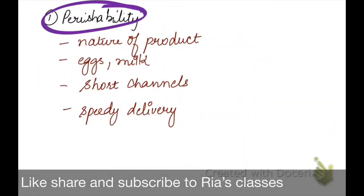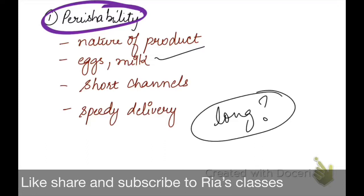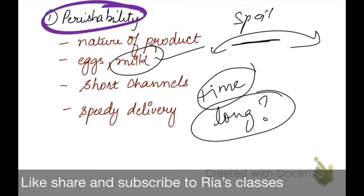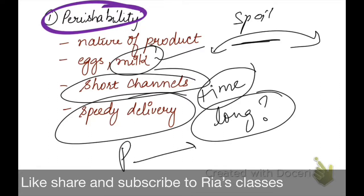The first factor regarding the product is perishability. Perishability means that products have a shorter life span and are consumed quickly — products such as eggs and milk are perishable products. So, if we use a long channel for perishable products — involving an agent, wholesaler, and retailer — the channel becomes long, which takes more time. For example, with milk, using a long channel means the product may spoil before reaching the consumer. To avoid this, we prefer short channels for perishable goods so that there is speedy delivery from producer to consumer.